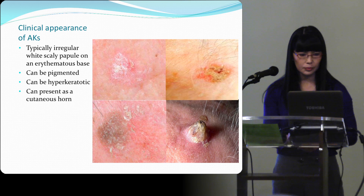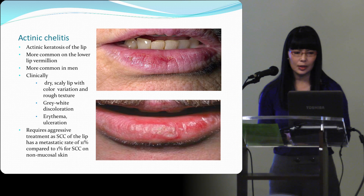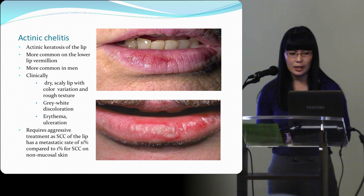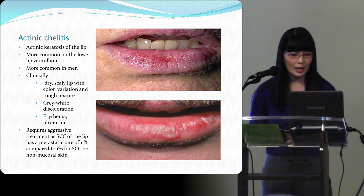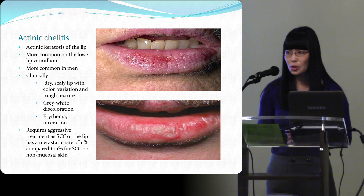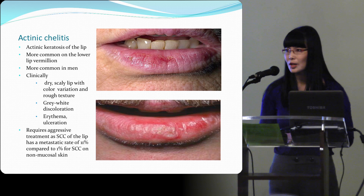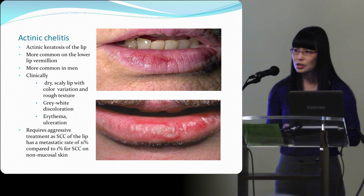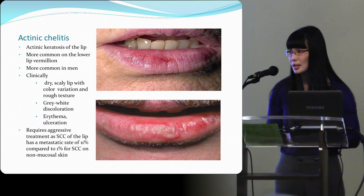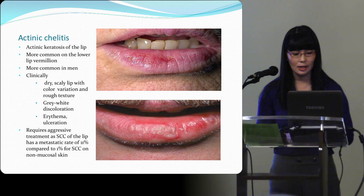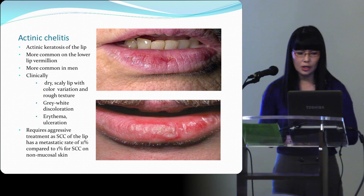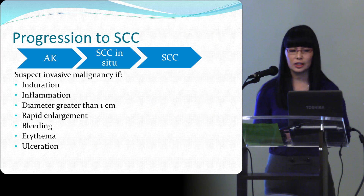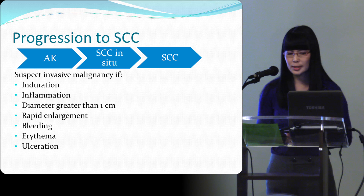Actinic cheilitis — actinic keratosis of the lip — is more common on the lower lip because the sun shines there more, and it's more common in men. Clinically you can see a dry scaly lip with color variation, rough texture, grayish white discoloration, erythema, and ulceration. You really need to treat this aggressively because if it turns into SCC of the lip, there's a metastatic rate of about 11%, compared to 1% on non-mucosal surfaces.